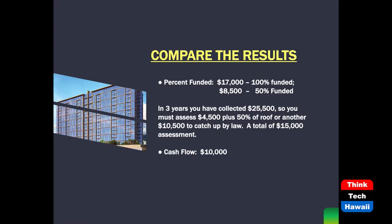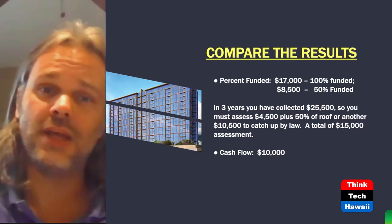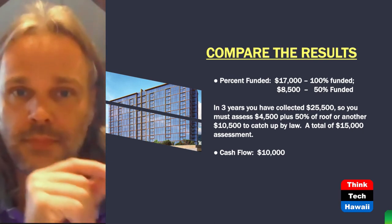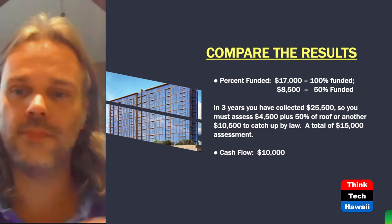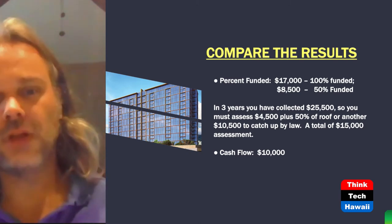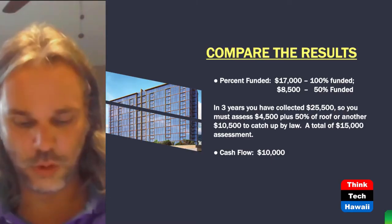Comparing the different results: with the percent funded method, to be 100 percent funded you collect $17,000 annually; at 50 percent funded you collect $8,500. However, once that component comes due, you only have 50 percent of the funds needed for that specific component because it is a component funding method — you are saving specific funds for that component and cannot take from other components. Utilizing the cash flow method, you need to collect $10,000 at a bare minimum to collect $100,000 over that 10-year period. But you do not want to ride the minimum requirements — make sure you have balances that are healthy and can cover unanticipated expenditures.